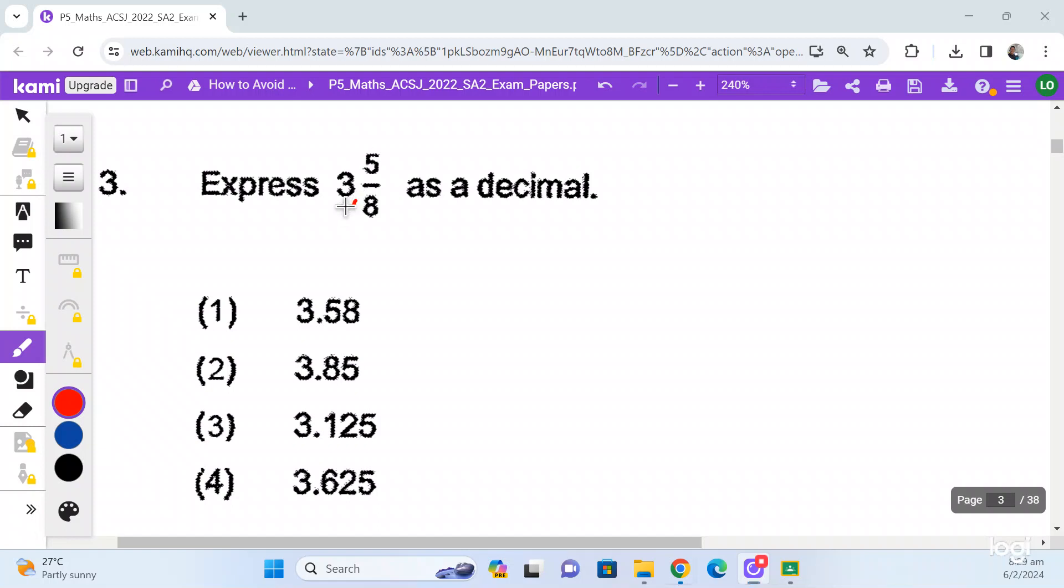The other way is they convert the mixed number into improper fraction. So you have 3 times 8 is 24, 24 plus 5 will be 29 over 8. And they understood that when you see fraction, you have to divide. So then they continue with one more step, taking 29 divided by 8.